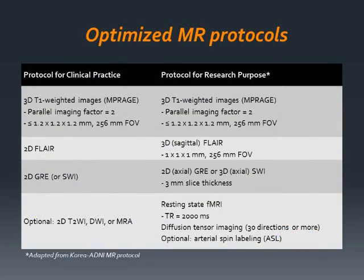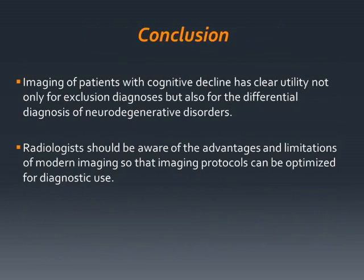For the reason that most patients with suspected dementia are elderly and represent a distinct population, a tailored MRI protocol is mandatory. In this article, we have provided such an MRI protocol, which was initially devised for the Korean ADNI study by modification of the ADNI protocol. In conclusion, imaging a patient with cognitive decline has clear utility not only for excluding diagnoses, but also for the differential diagnosis of neurodegenerative disorders. Radiologists should be aware of the advantages and limitations of modern imaging so that imaging protocols can be optimized for diagnostic use.